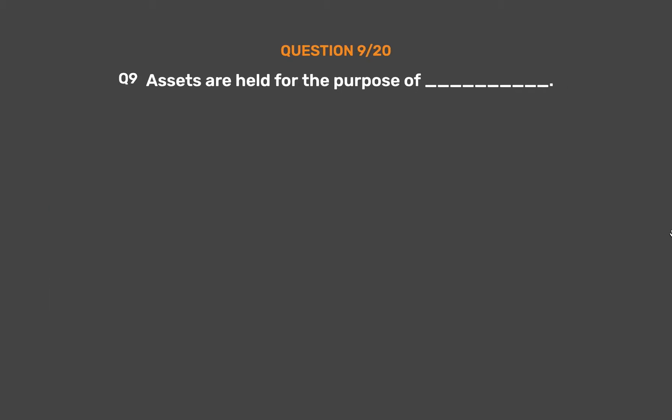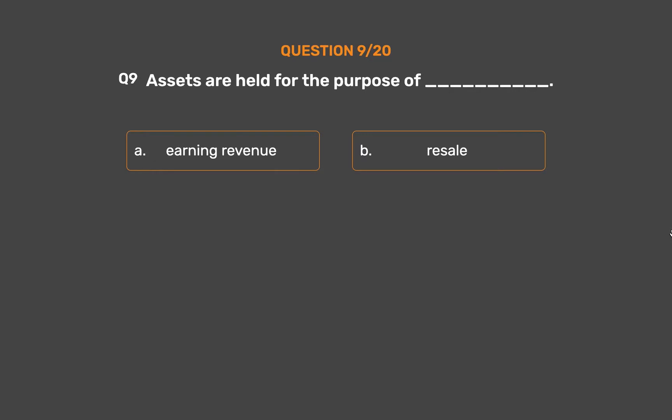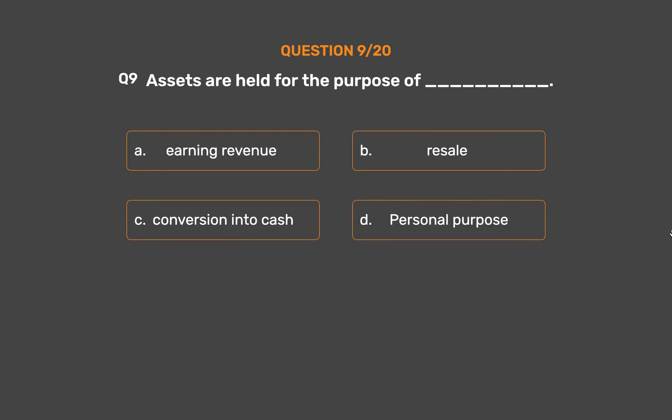Question number nine: assets are held for the purpose of — Option A: earning revenue. Option B: resale. Option C: conversion into cash. Option D: personal purpose.